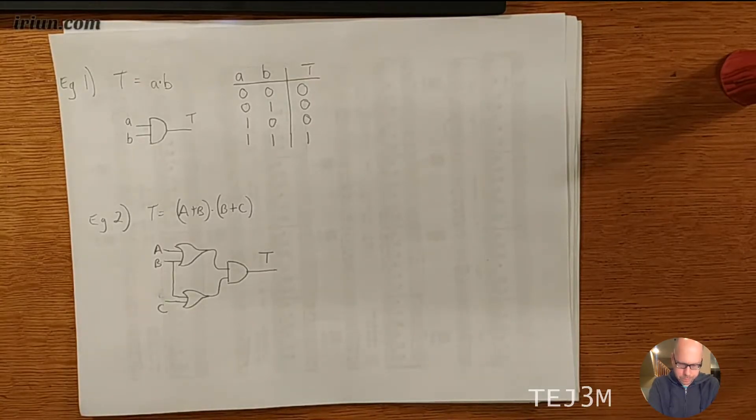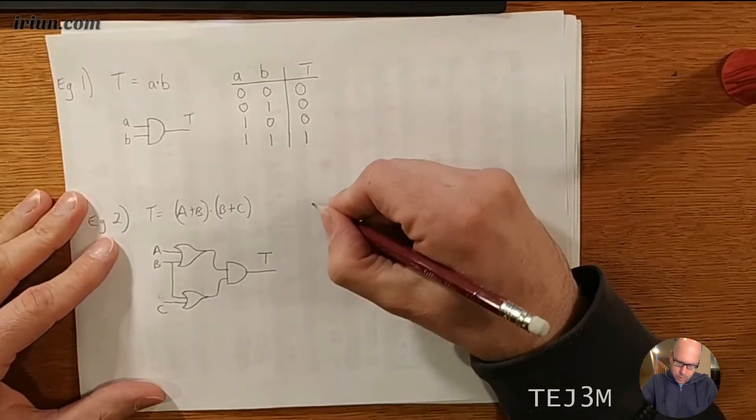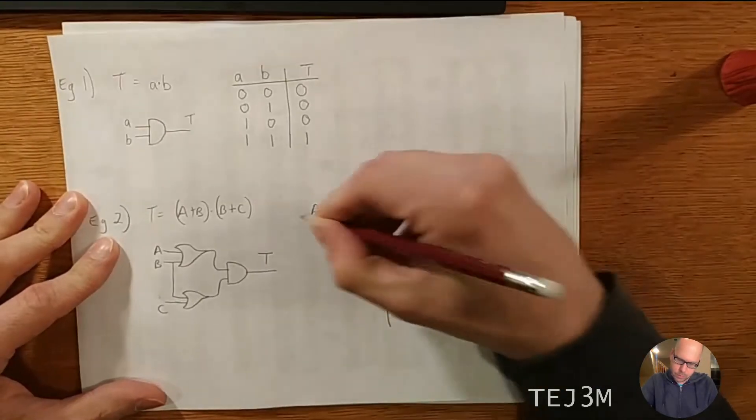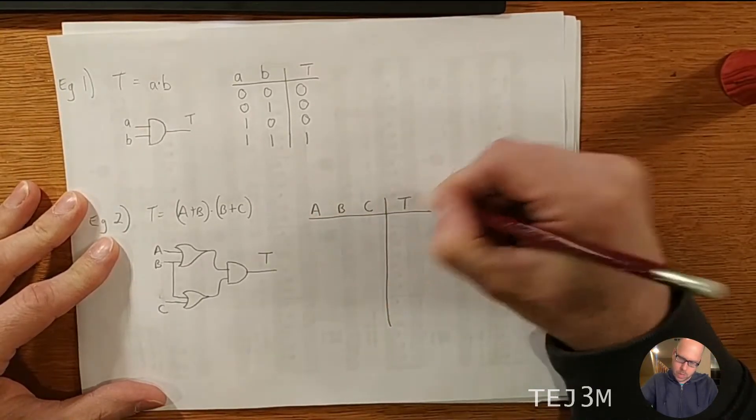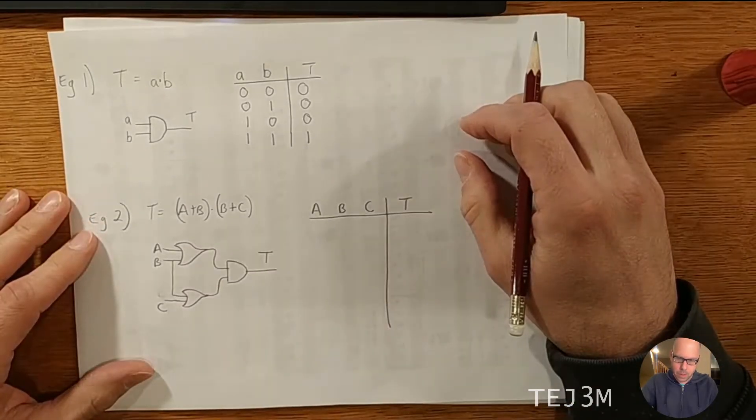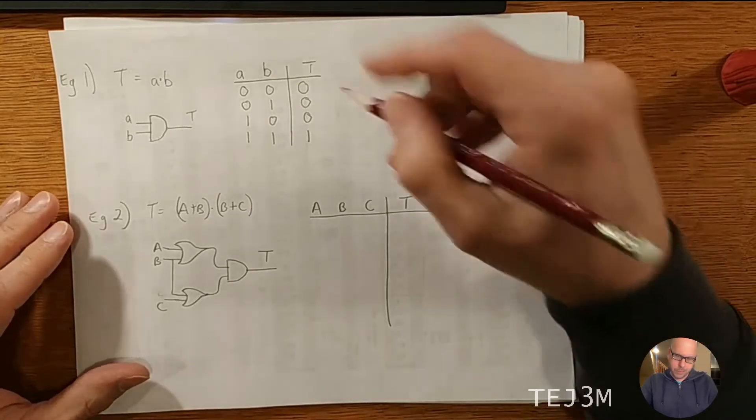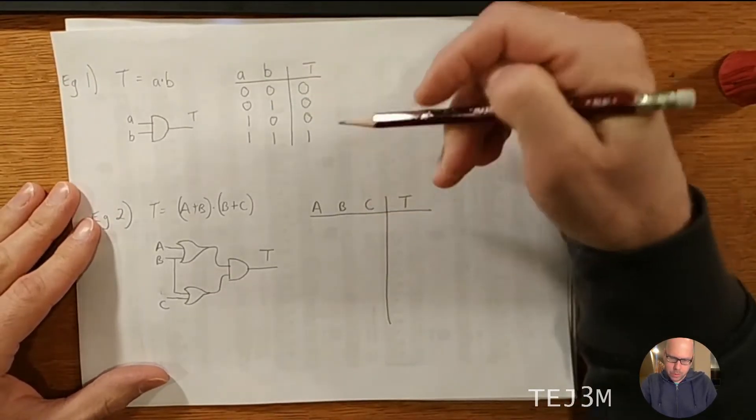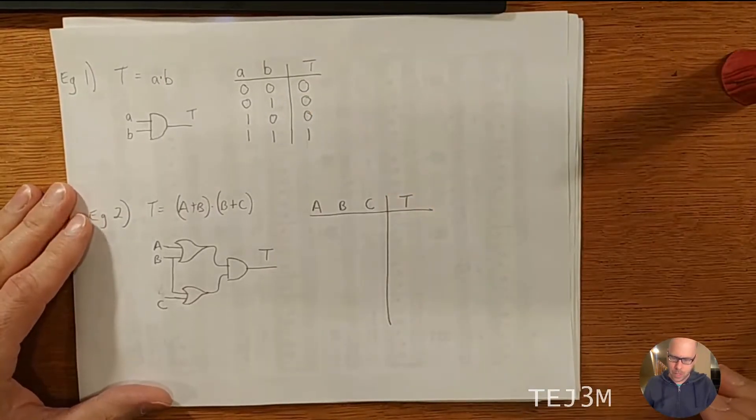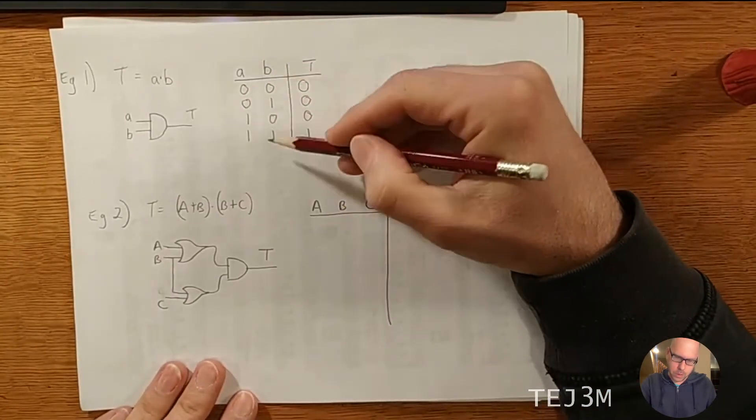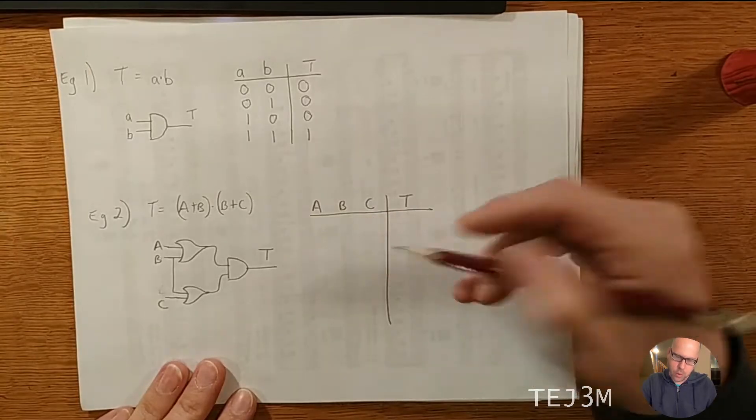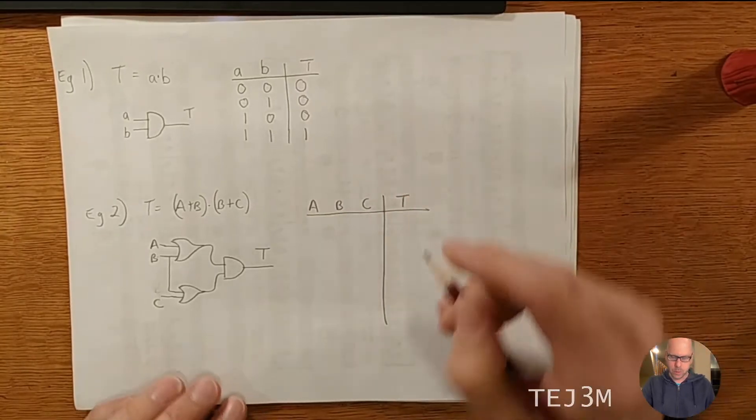So with a truth table with three inputs, how many possible combinations of zeros and ones can you have? The answer is eight. Here's an easy way to remember that. However many inputs you have, it's two to the power of the number of inputs. And that will tell you how many combinations you have. So with two inputs, it's two to the power of two or four possible combinations. With three inputs, you have two to the power of three or eight inputs.